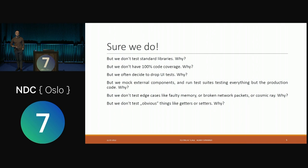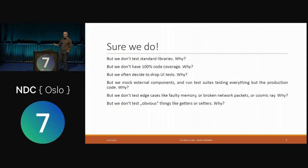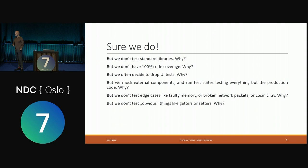We pretty often mock external components — and by 'mock' I mean any piece that replaces a production component. Whether it's a Mockito mock, a test container running locally, or an in-memory H2 database instead of Oracle. Whenever you replace a production component, you are effectively mocking it. But we know most issues come not from buggy algorithm implementations, but from integration points. So why claim we test our applications when we don't test where the risk is highest?